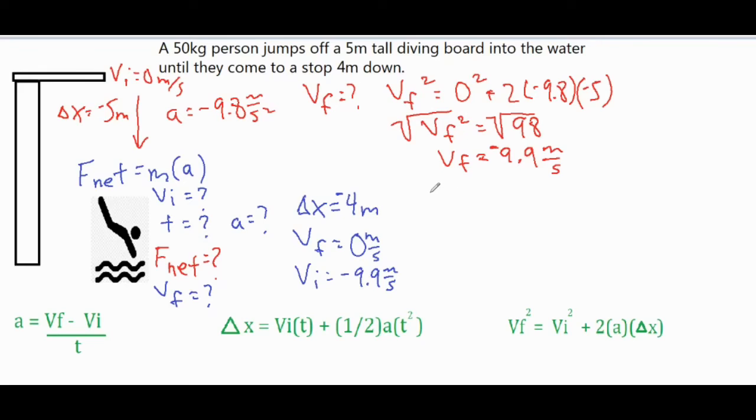This one right here, we have a V squared of zero, a VI squared of negative 9.9 squared plus 2A and our delta X is negative 4. So that's going to give us 0 equals 98.01 plus, and then I'll take the 2 and the negative 4, multiply those, which gives us a coefficient of negative 8 in front of the A.